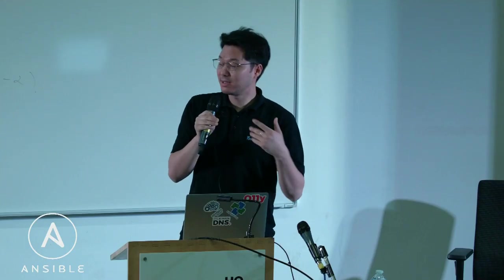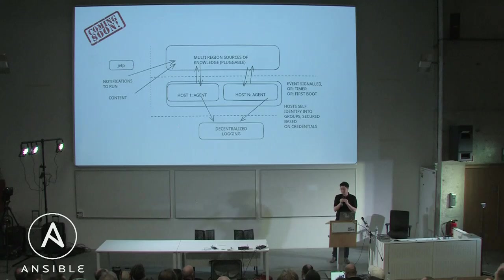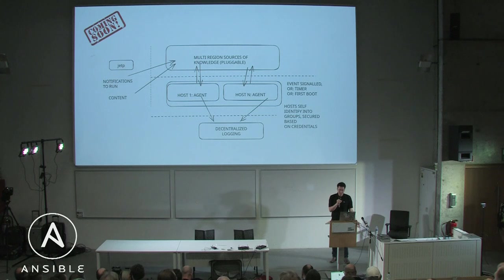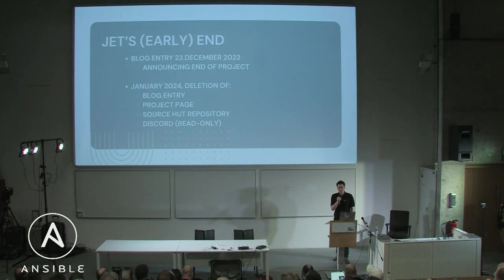It had on the roadmap this idea of a so-called planetary scale — the idea was that you could scale this up exponentially. However, this was not realized because JET ended very early, very suddenly.